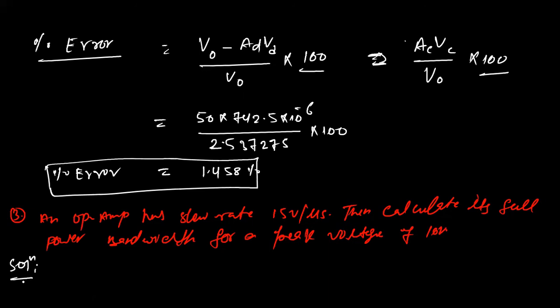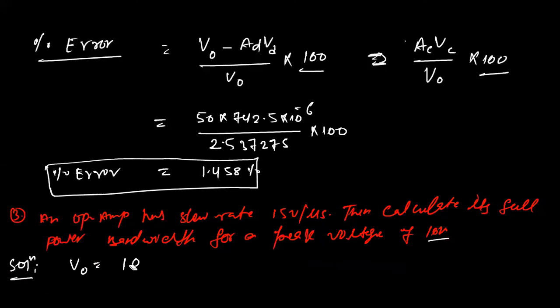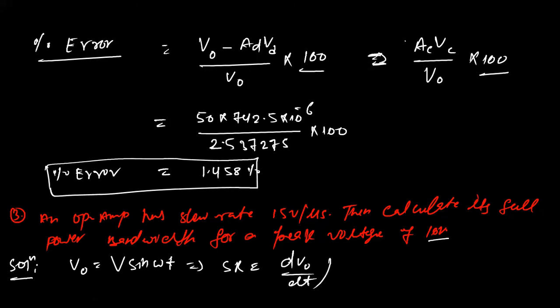This question is based on slew rate. The peak voltage is given as 10 volts. We assume a sinusoidal output waveform: V_out = V × sin(ωt). The slew rate is defined as the maximum value of dV_out/dt.